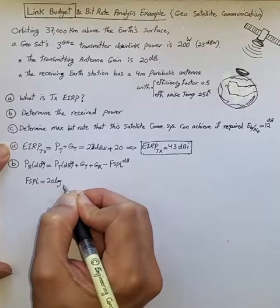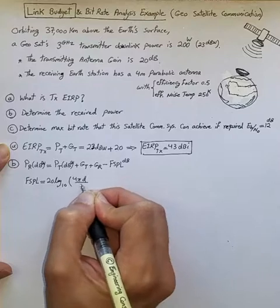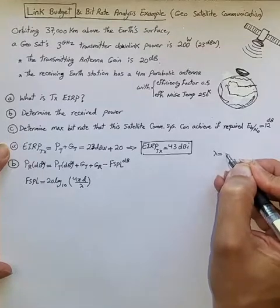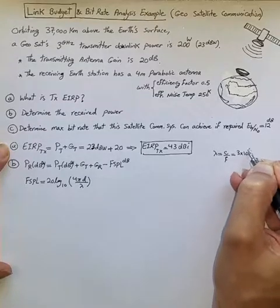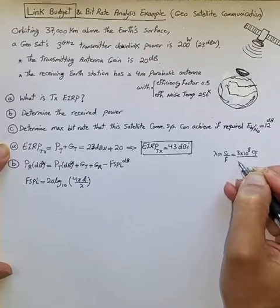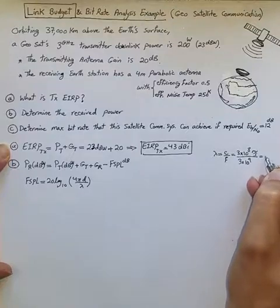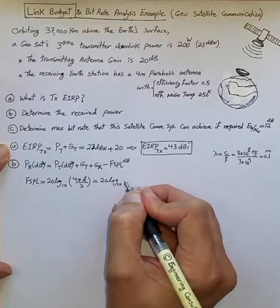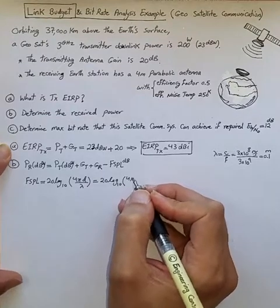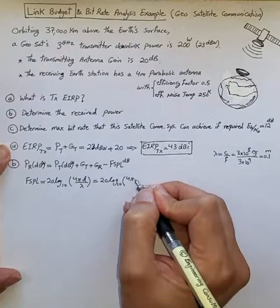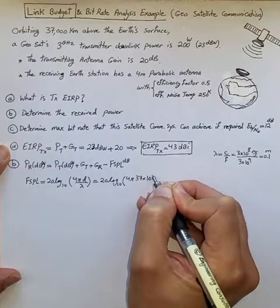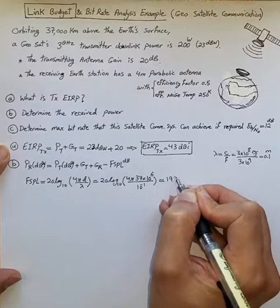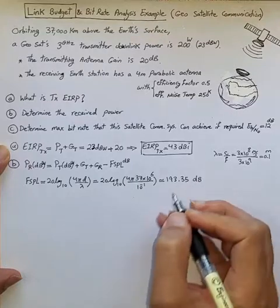For free space path loss, we use 20 log10(4πd/λ). Lambda is c over f, where c is the speed of light and f is the transmitter frequency of 3 GHz, giving λ = 0.1 meter. The distance d is 37,000 km, or 37×10^6 meters divided by 10^-1. This computes to a free space path loss of 193.35 dB.